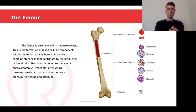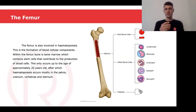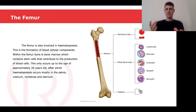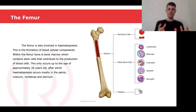The femur is also involved in something called hematopoiesis — the formation of blood cellular components. Within the femur there is its narrow shaft and inside that is bone marrow, which contains stem cells that contribute to the production of blood cells. This only occurs in children, so anyone under the age of 20 years old has this hematopoiesis. However, once we become adults, this occurs in other bones such as the pelvis, cranium, vertebrae and sternum.